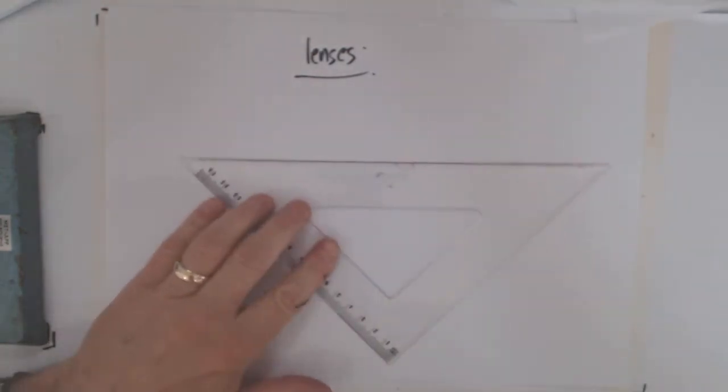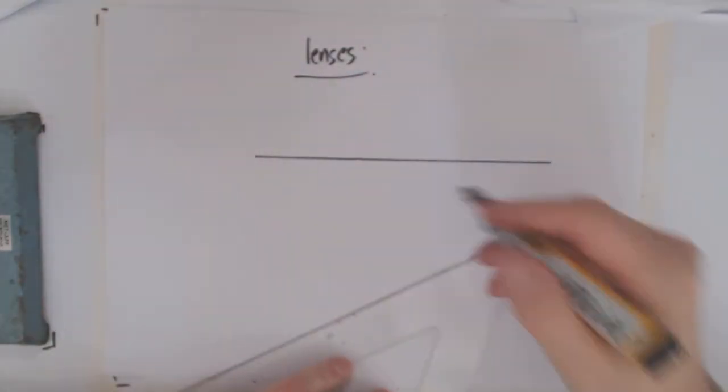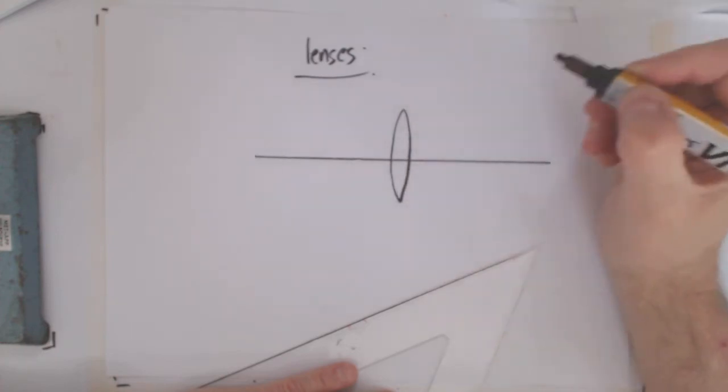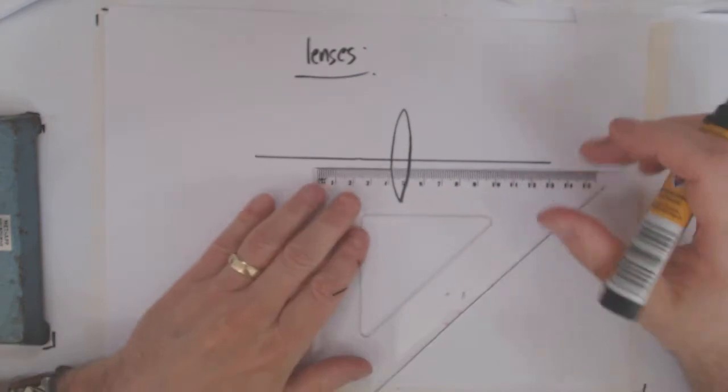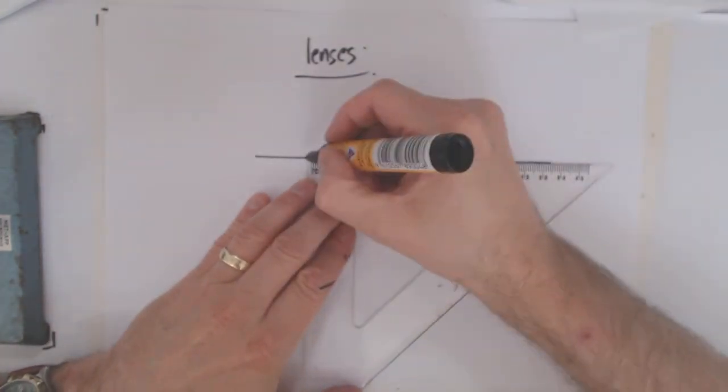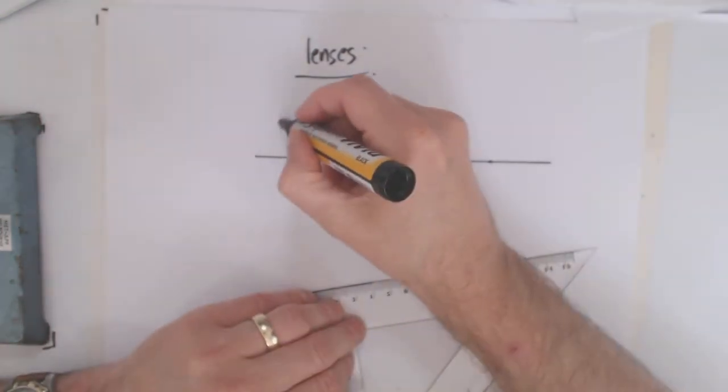So we've got a converging lens. These lenses make the light converge. You can call them convex because they bulge out, or you could just say converging. If I put a focal point there and a focal point there, let's have an object here.